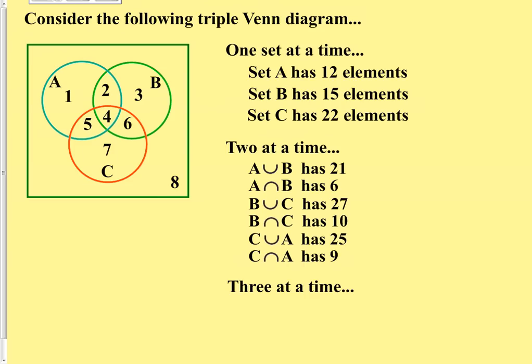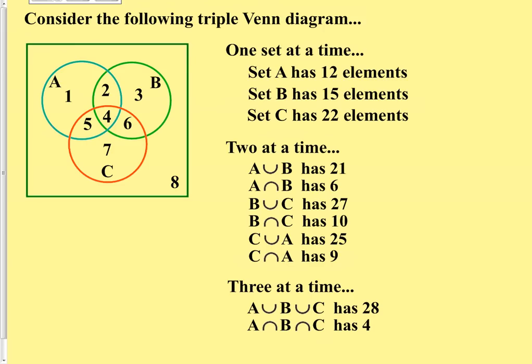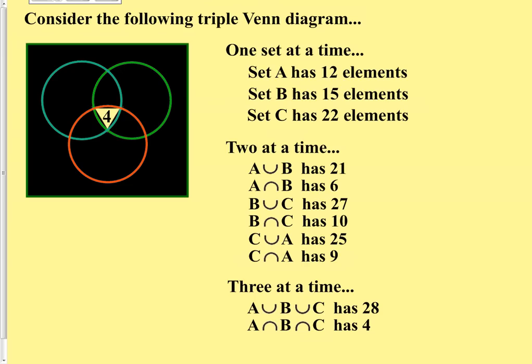And then finally, what would happen if we considered all three sets at the same time? The union of all three sets has 28 elements in it. And of course, the union means anywhere is all good, so anything that exists in set A or set B or set C would be in this response, and there are 28 particular values that are showing up in the union of all three. And the intersection would be only the area that exists where all three sets run across each other, and that would be the four that is in the triple overlap inside of the center.